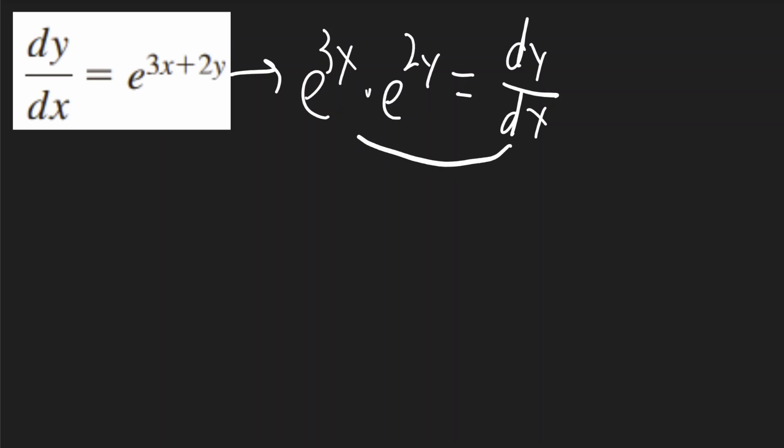I can multiply both sides by dx and I can divide both sides by e to the 2y. So I'll get e to the 3x dx will be equal to dy over e to the 2y.